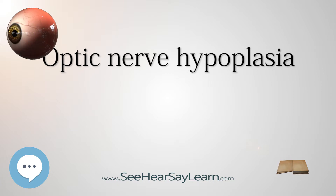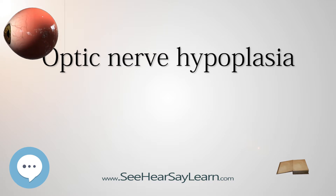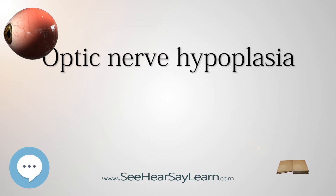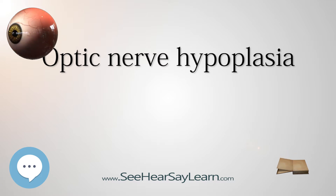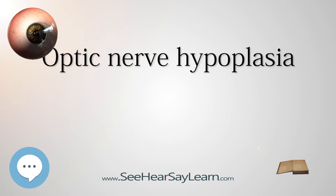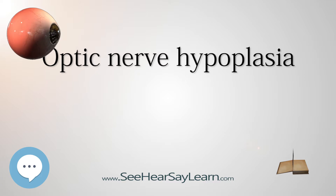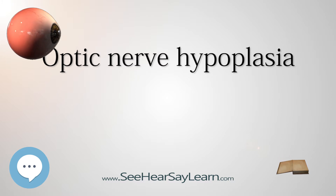Oxytocin is also produced in the posterior pituitary gland. Though best known for its role in childbirth and lactation, oxytocin has also been found to have a role in human bonding, increase in trust, and decrease in fear. Hypothalamic dysfunction may also result in problems with feeding, sleep, and body temperature regulation. Feeding behaviors in children with ONH often include hyperphagia (overeating resulting in obesity) or hypophagia (reduced food intake with or without weight loss). Children also frequently experience aversion to specific textures of food.